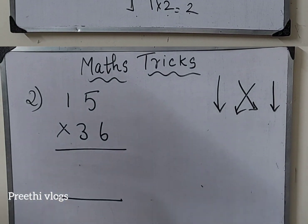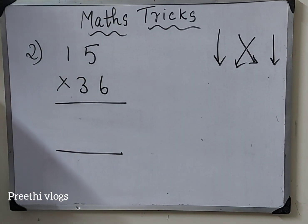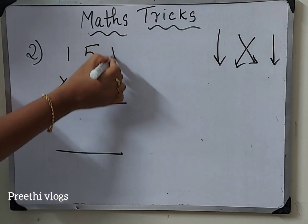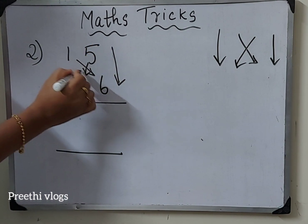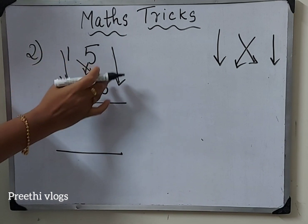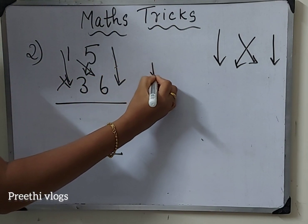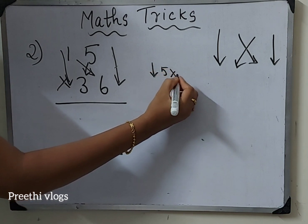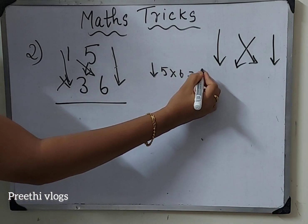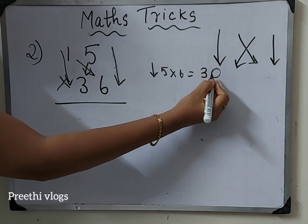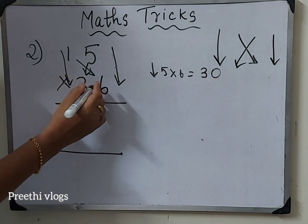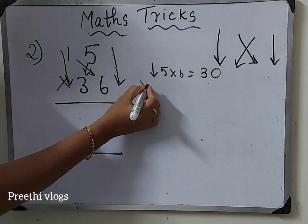Next sum. Now, carryover numbers - how do we do this? The steps are down arrow mark, cross arrow mark, and another down arrow mark. First down arrow mark: left side numbers 5 into 6 equal to 30. Cross arrow mark, second step.